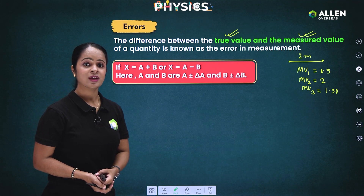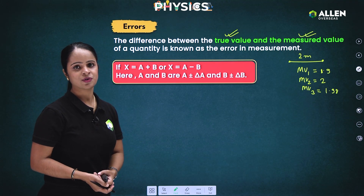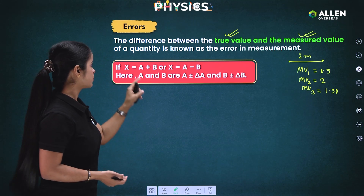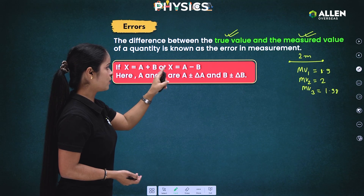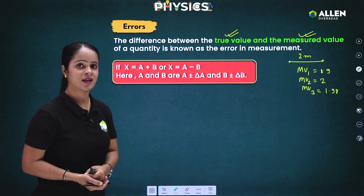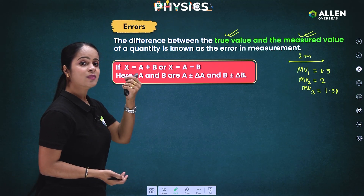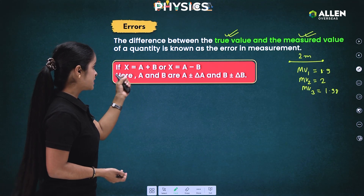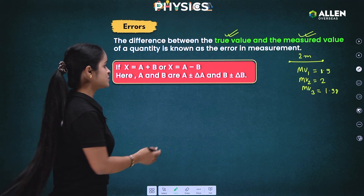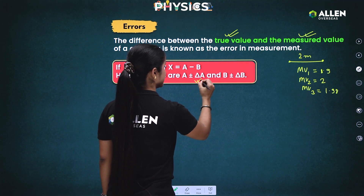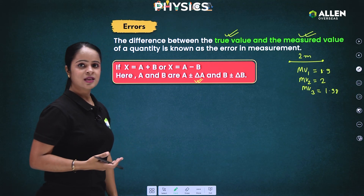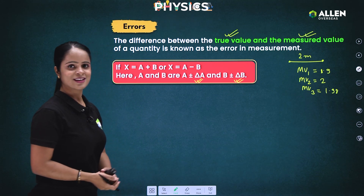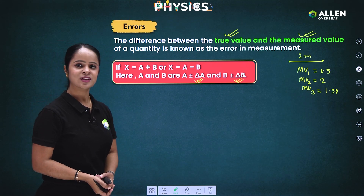Here we are going to see the mathematical representation of these errors. If X equals A plus B or X equals A minus B, where A has some error as well as B also has some errors, the error in A is represented by delta A and the error in B is represented by delta B.